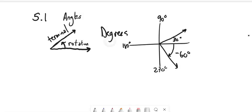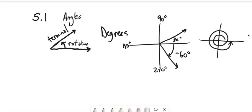We could go around twice — that would be 720 degrees, two 360s. So there's degrees; I'm sure you've seen them before a lot.